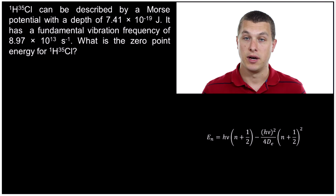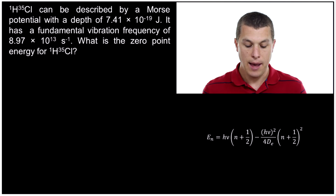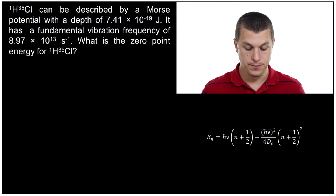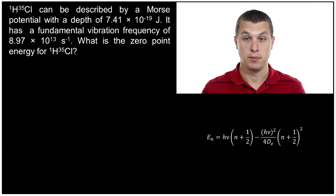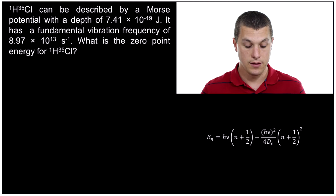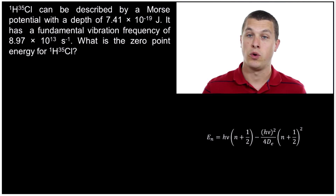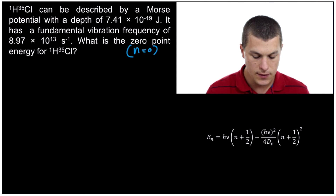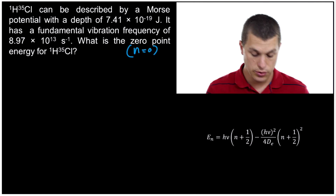Let's look at a problem you might see for the Morse potential. HCl can be described by a Morse potential with a depth of 7.41 times 10 to the minus 19 joules — that's the dE parameter. It has a fundamental vibration frequency of 8.97 times 10 to the 13th per second. The question asks: what's the zero point energy for HCl? Remember, the zero point energy is when n is equal to zero — the lowest possible energy the molecule can be in.